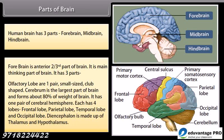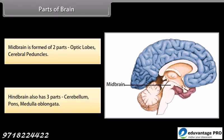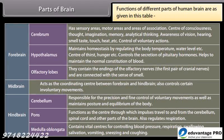The forebrain has three parts: olfactory lobes (one pair, small, club-shaped), cerebrum (the largest part, forming about 80% of brain weight, with one pair of cerebral hemispheres each having four lobes: frontal, parietal, temporal, and occipital), and diencephalon (made of thalamus and hypothalamus). The midbrain is formed of optic lobes and cerebral peduncles. The hindbrain has three parts: cerebellum, pons, and medulla oblongata.